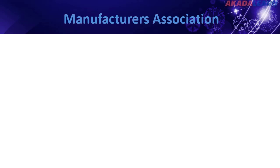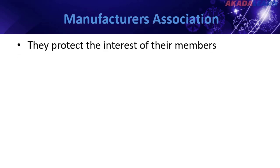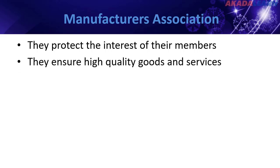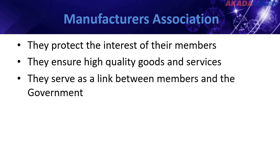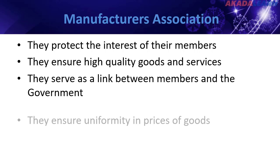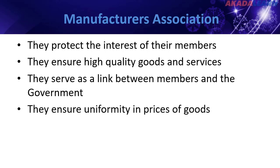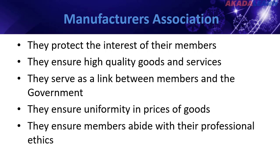The functions of manufacturers' associations are as follows: 1. They protect the interests of their members. 2. They ensure high-quality goods and services. 3. They serve as a link between their members and the government. 4. They ensure uniformity in prices of their goods. 5. They ensure members abide by their professional ethics.